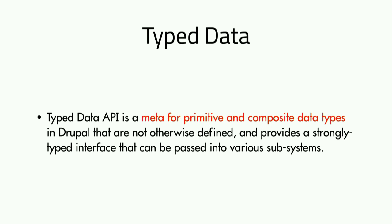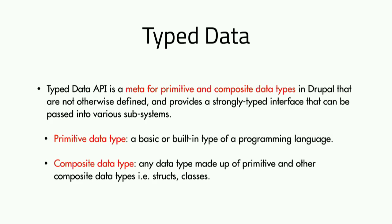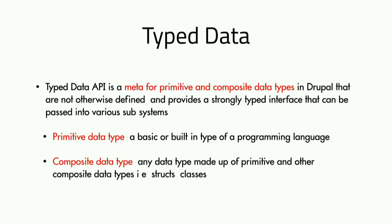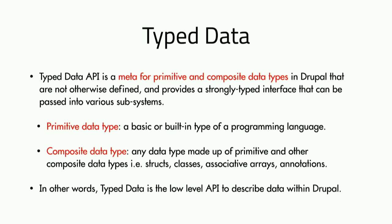In my own words, I describe the Type Data API as a meta for primitive and composite data types in Drupal that are not otherwise defined, providing a strongly typed interface that can be passed into various subsystems. Primitive data types are basic or built-in types of a programming language; composite data types are made up of primitives — structs and classes. Type Data API is the low-level API to describe data within Drupal, not about instantiating new PHP types. It's a meta language around describing data.